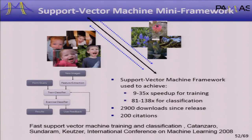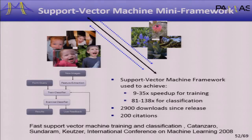This was a very successful application: 9 to 35x speedup for training, even faster speedups for classification. The code has had 2,900 downloads, and the paper now has 200 citations. The relevant point is that this is a real application — a key kernel in machine learning — and it really does have the software architecture described. That gives a real sense of the level of detail involved in architecting parallel software.